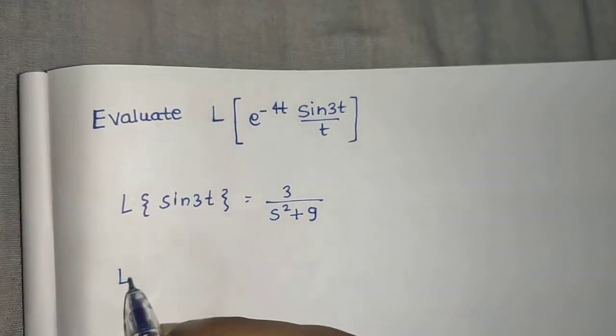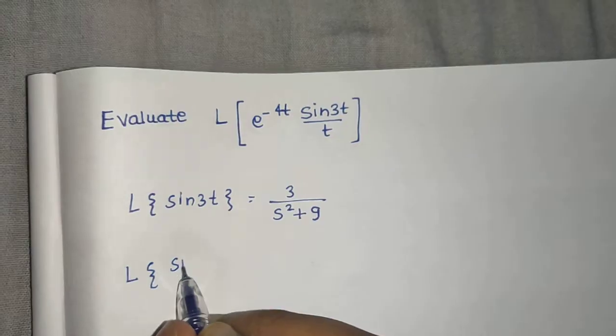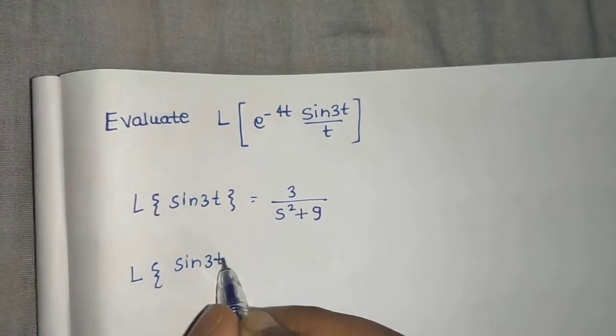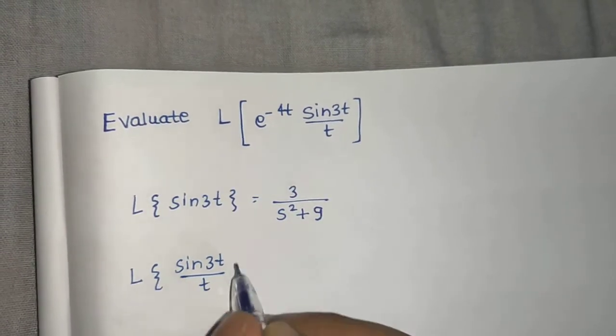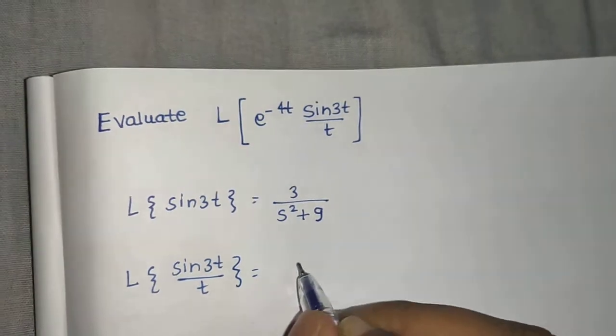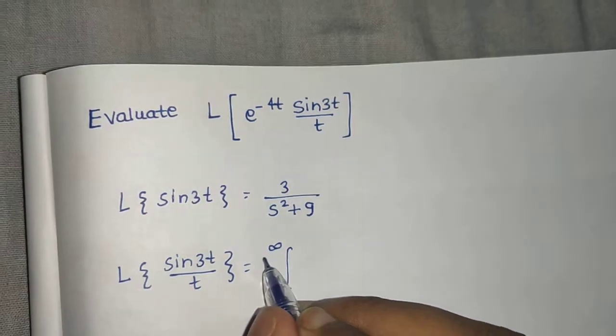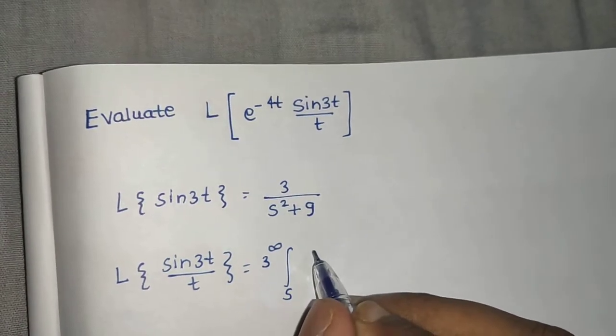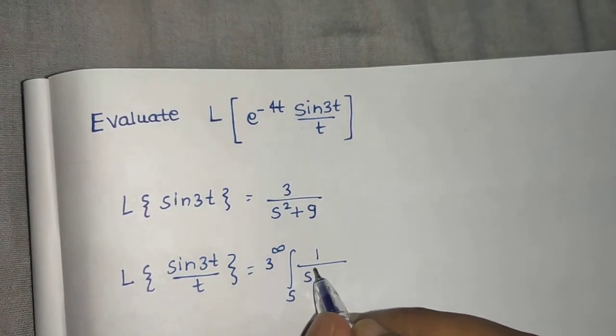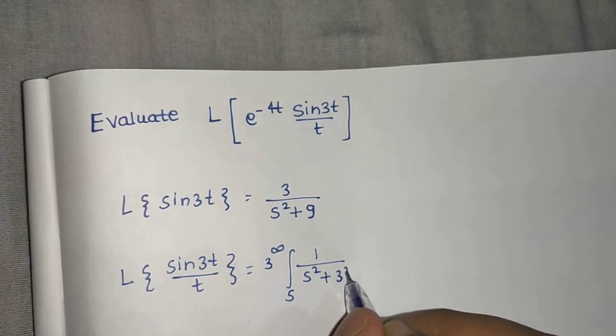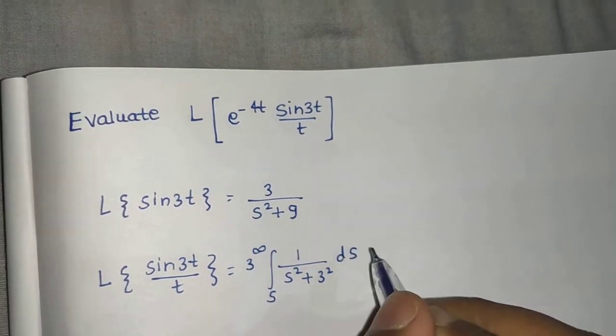Now division by t. So Laplace of sine 3t divided by t will be integration from s to infinity of whatever we got in the previous step. So we can take this 3 out and 1 upon s square plus we can write this as 3 square, integrate with respect to s.